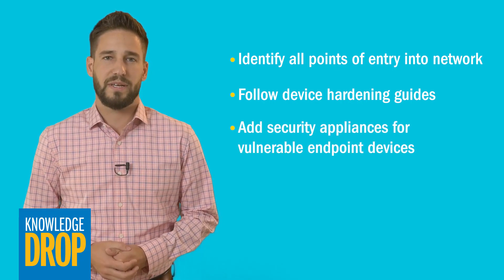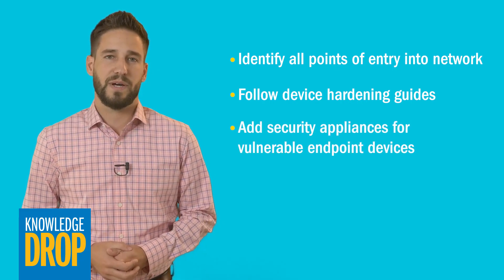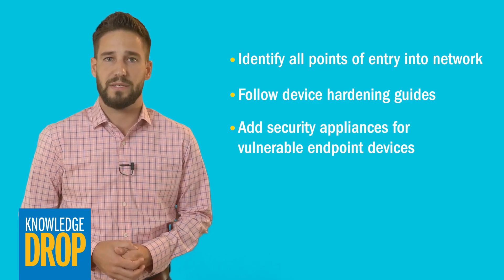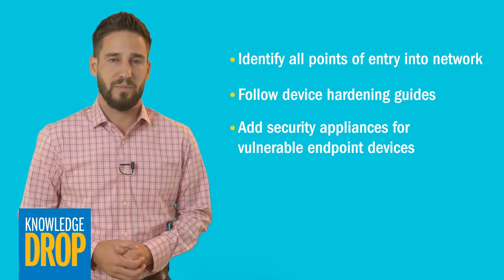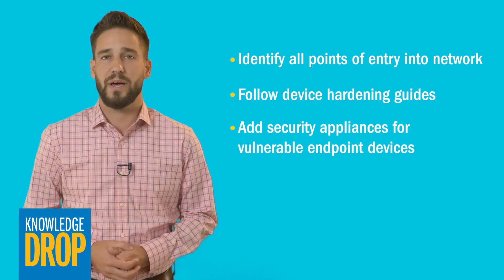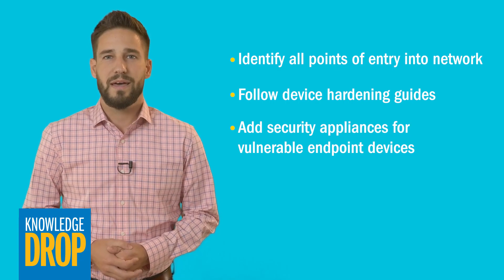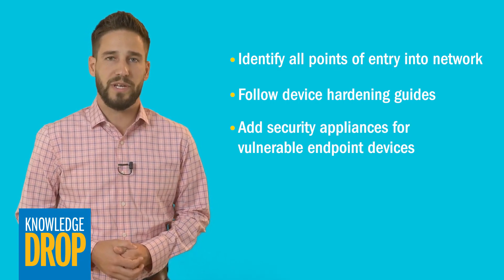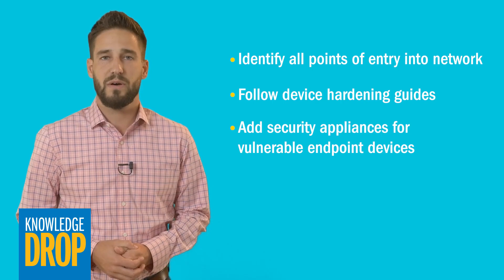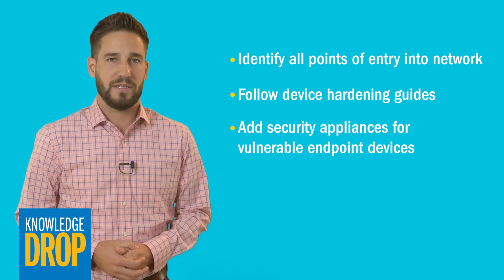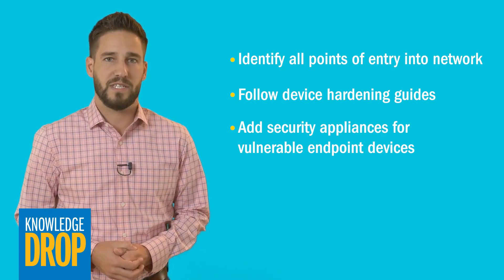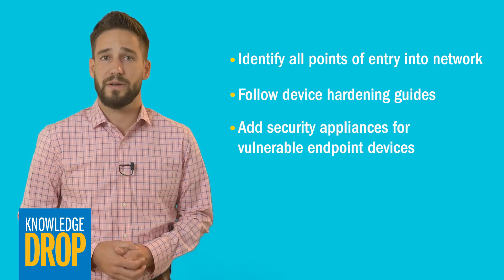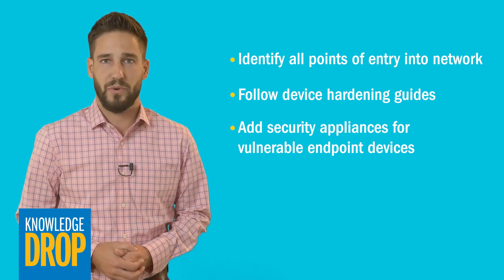You may also want to consider using specialized security hardware such as deep packet inspection appliances and inline blocking tools to protect critical endpoints. These devices allow you to set traffic rules so that only appropriate communication flows through to your network, which is particularly important for devices that aren't in a secured environment or are considered mission critical.